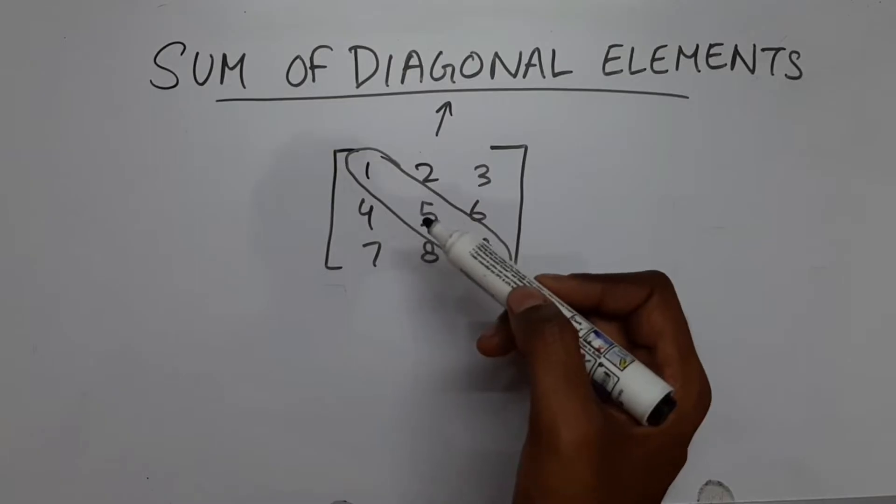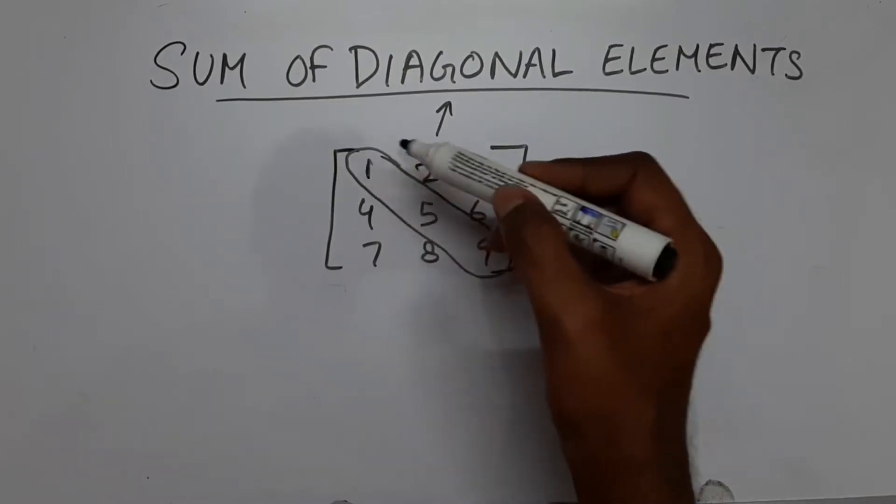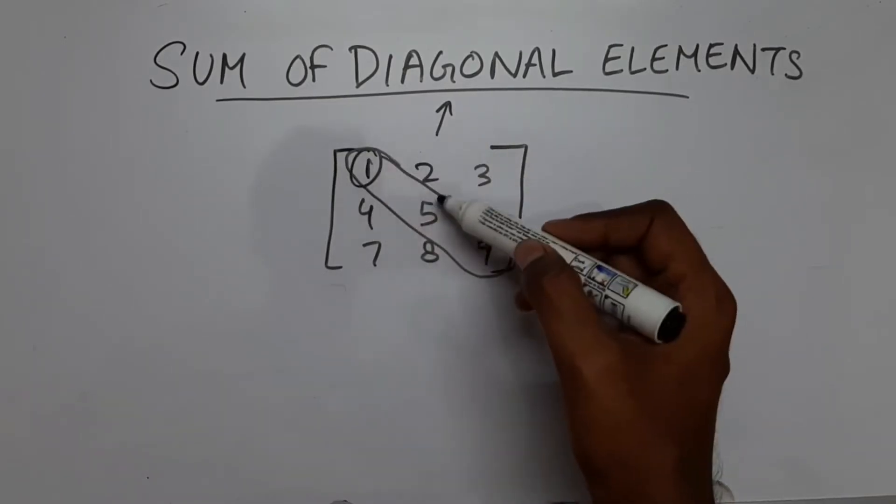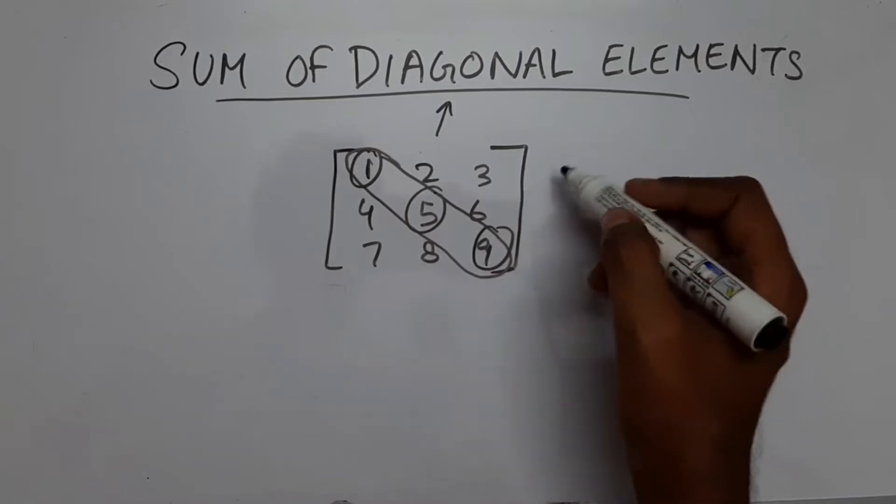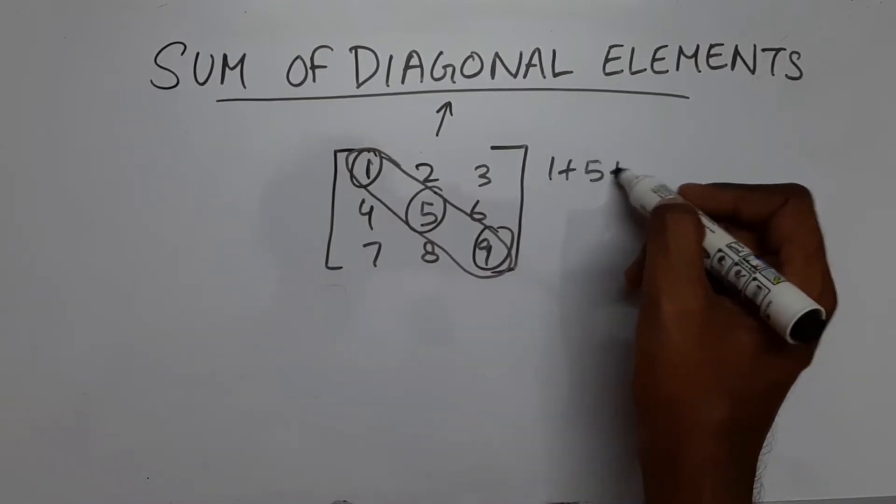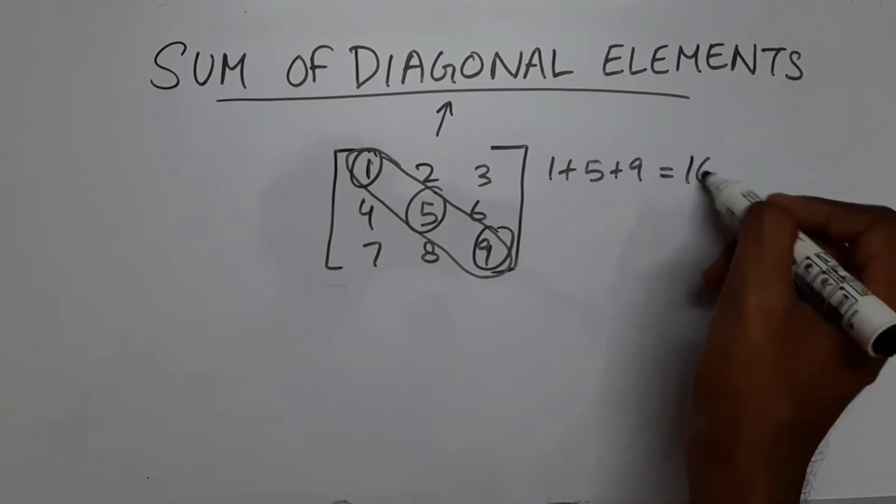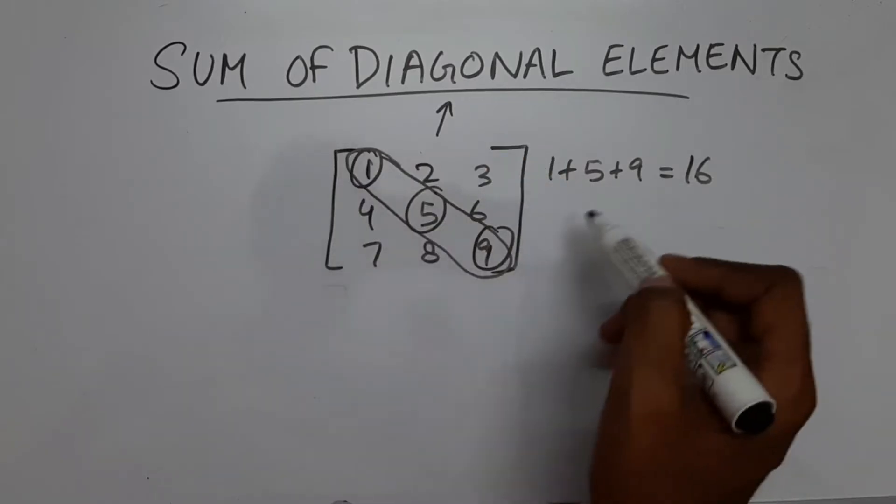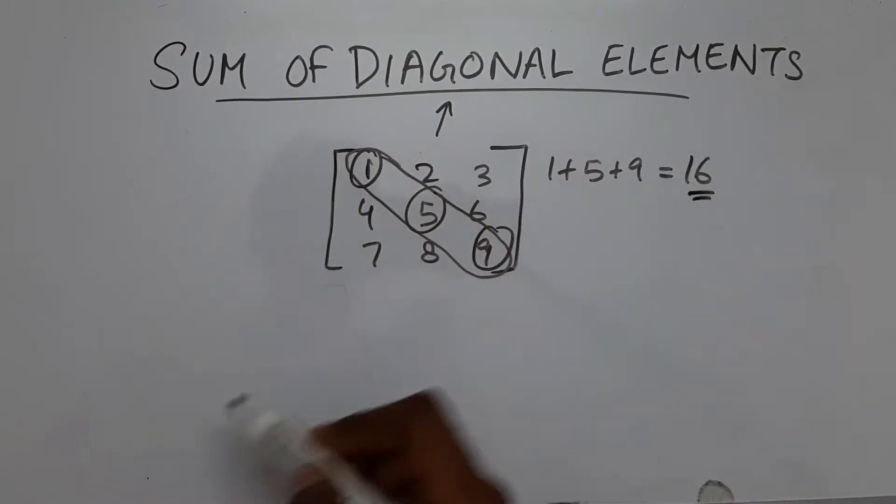This is the diagonal whose sum we are going to find. So in this case it will be 1 plus 5 plus 9, which equals 16. So this is our diagonal and this is the sum of our diagonal.